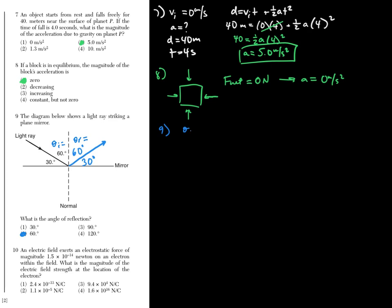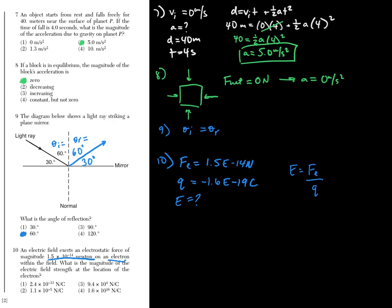Number ten: an electric field exerts an electrostatic force on a charge. The charge is implied to be an electron or proton: 1.6 × 10⁻¹⁹ coulombs, which is on the front of the reference table. We use E = F_e / Q, plug in the values, and get approximately 9.4 × 10⁴ newtons per coulomb.